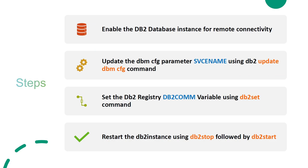Before allowing the database to accept remote connections, there are some settings required. By default, the DB2 database will not be enabled for remote connections. You need to update the DBM config parameter called service name using the 'db2 update dbm cfg' command to the port number you want DB2 to listen on. You also need to set the DB2COMM registry variable to TCPIP using the 'db2set' command. These two parameters require the instance to be recycled — stop and start your DB2 instance.